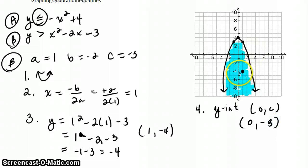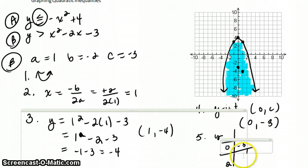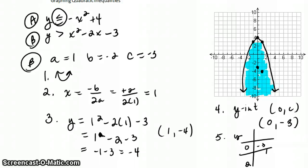Our y-intercept is always 0c when we're in standard form. So in this case, it's going to be 0, negative 3. Go ahead and graph that. Okay, and then if we have our table of values. If we put our vertex here, our vertex is 1, negative 4, 0, negative 3. Then we want the point 2, negative 3.